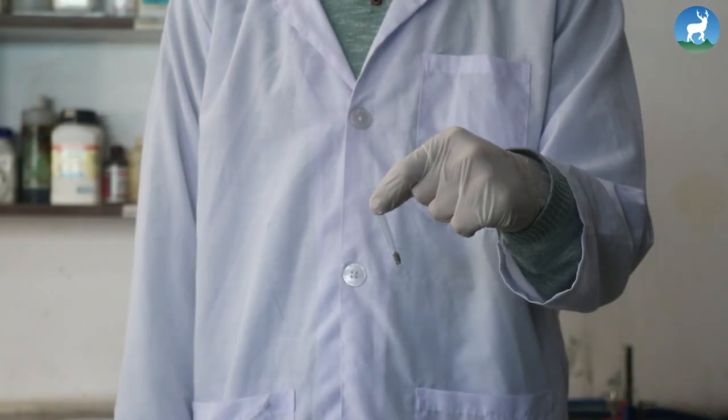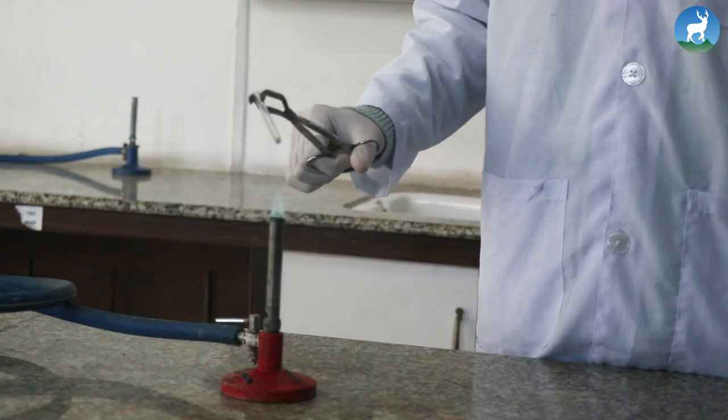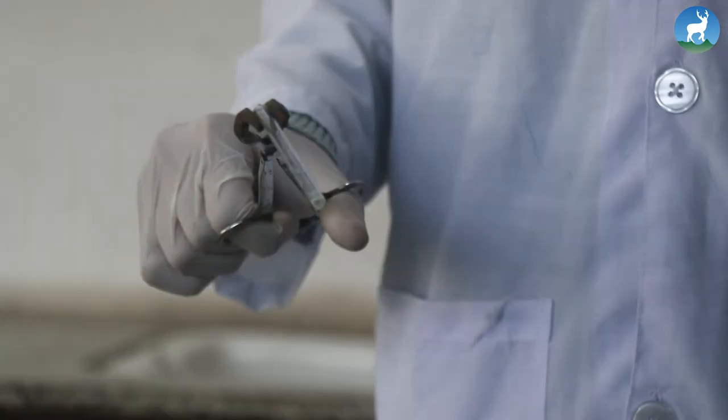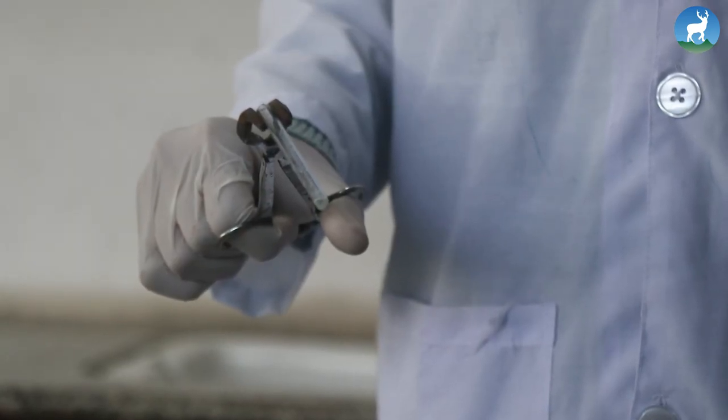Take a small piece of dry sodium metal in a fusion tube. Heat over the burner until it melts with a shining surface and cool it.